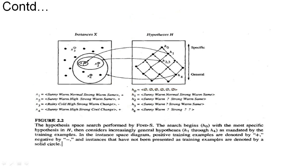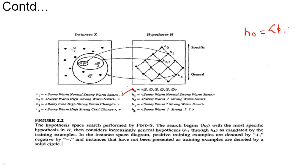In the Find-S algorithm, we only consider positively classified instances — negatively classified instances are ignored. The first step is to initialize H0 as the most specific hypothesis with all null values for six attributes. H0 does not classify any instance, so there is no mapping. We then move toward general and take the first positive instance X1, setting H1 with the same attribute values as X1: sunny, warm, normal, strong, warm, same.